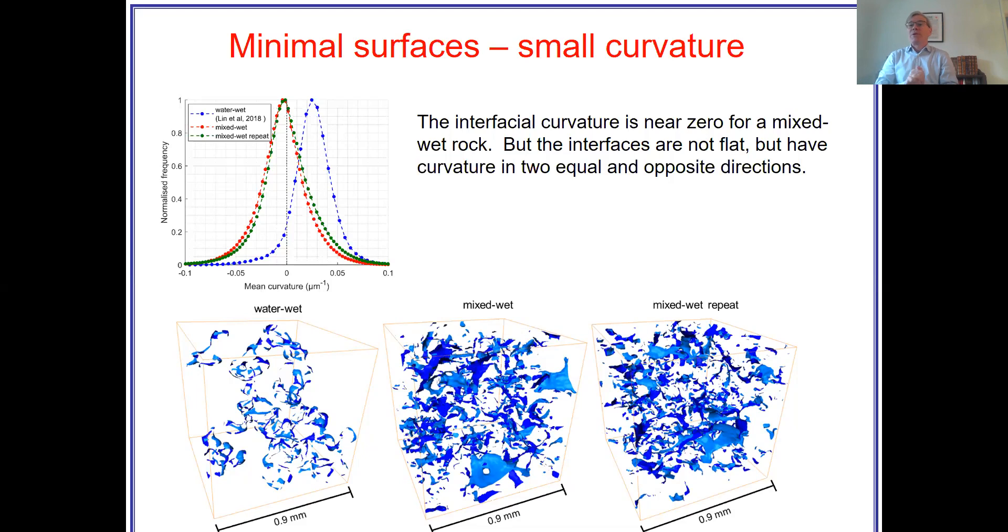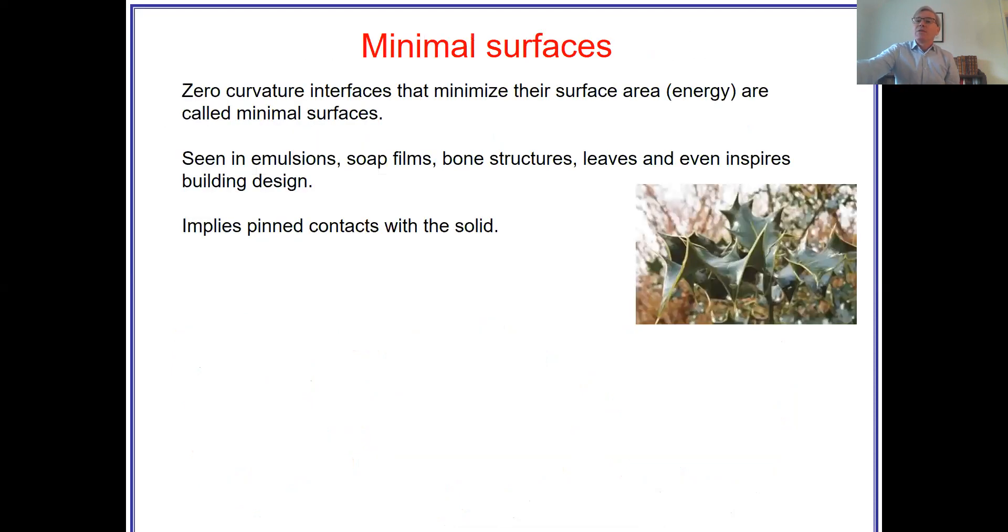Mixed-wet cases, and I've got two cases here, just to show you it's not some sort of fluke from one experiment. You've got a range of curvature. The average is almost exactly zero. But as you can see in the pictures, these are not flat interfaces between oil and water. They are curved one way, and an equal and opposite way, the other. So we have two equal and opposite curvatures.